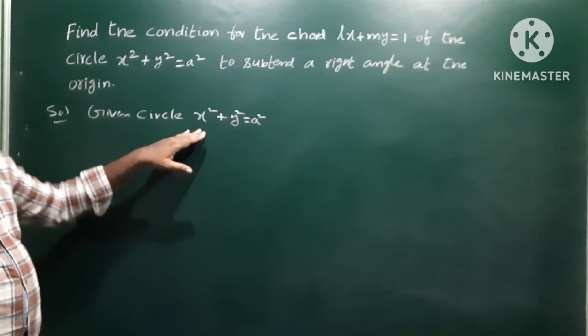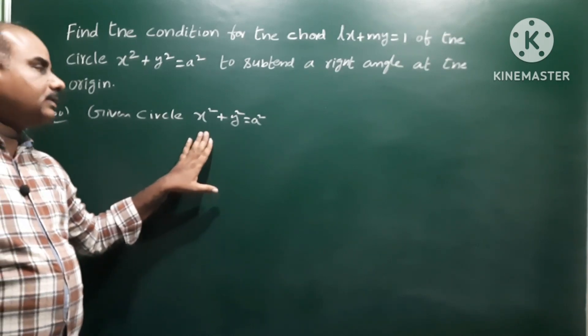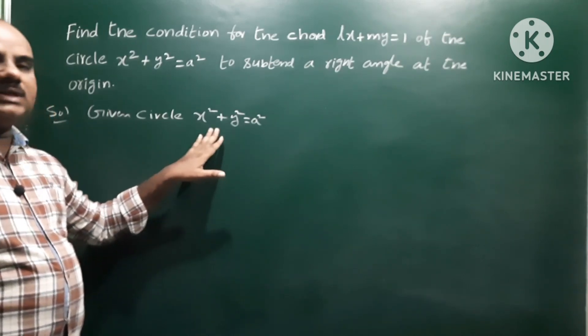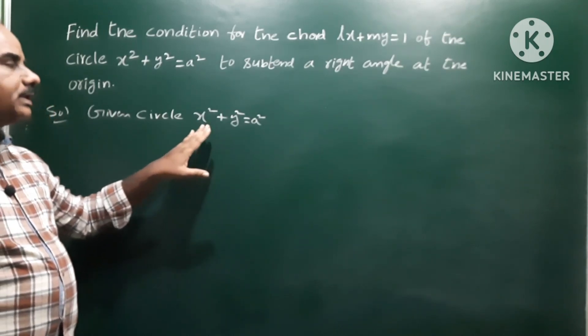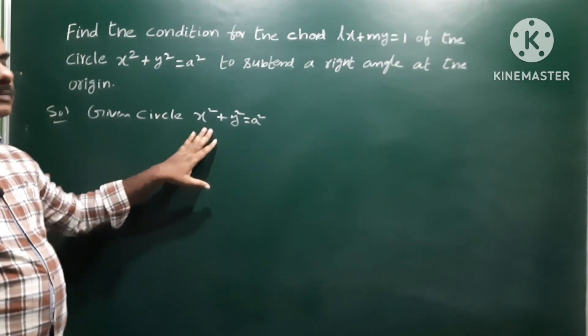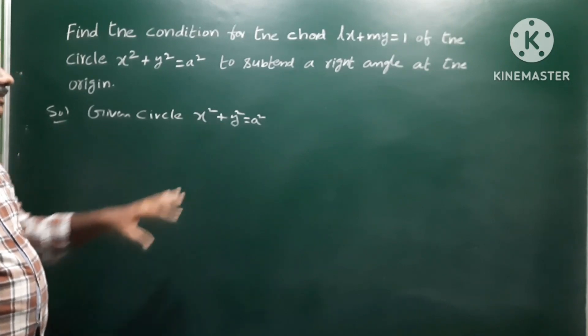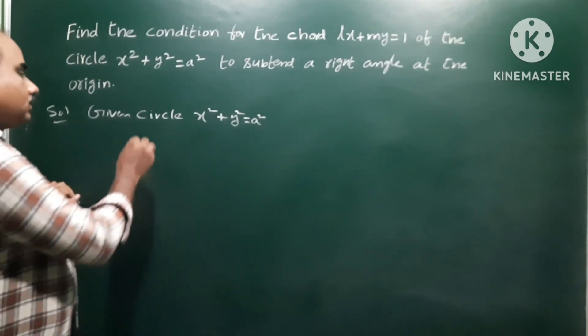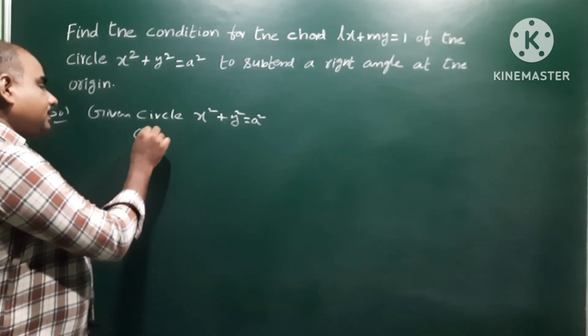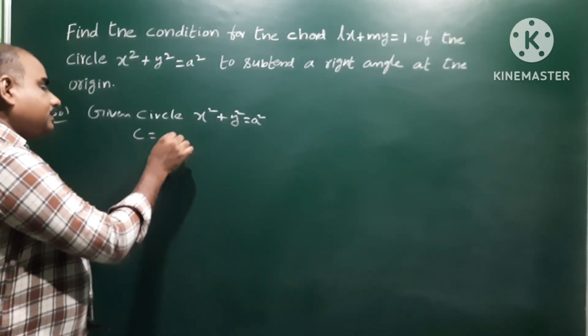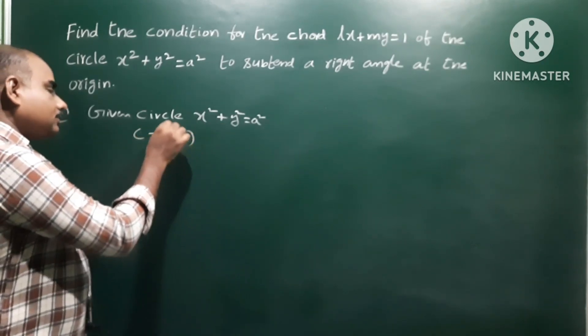If you observe the circle equation, it is in the standard form. The standard form means center is at (0, 0). So center C is equal to (0, 0).